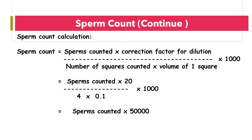How to do sperm concentration calculation: sperm concentration equals sperms counted multiplied by the correction factor for dilution, divided by number of squares counted multiplied by volume of one square, and the whole is multiplied by 1000. In shortcut, it is sperms counted multiplied by 50,000.